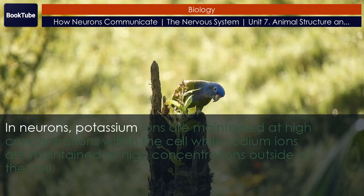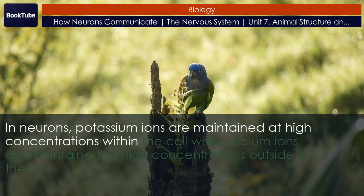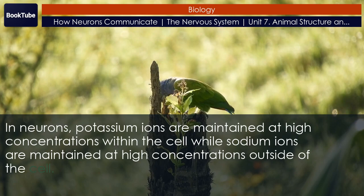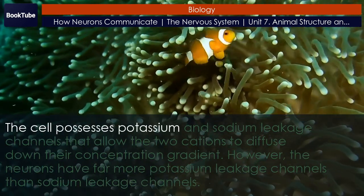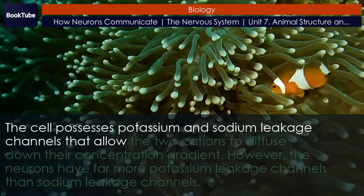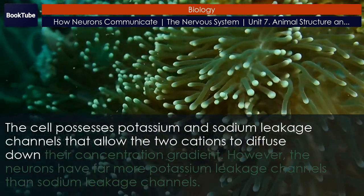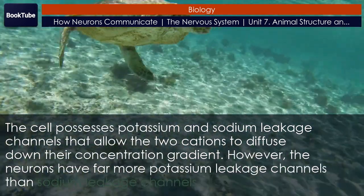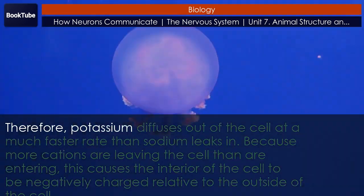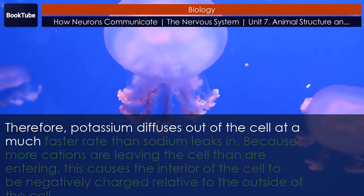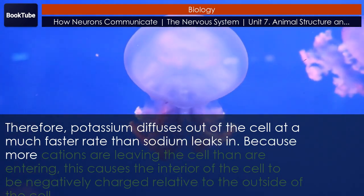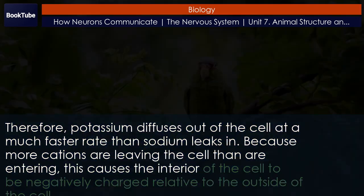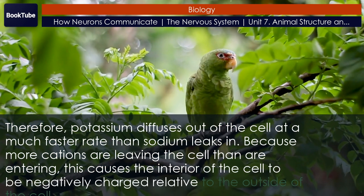In neurons, potassium ions are maintained at high concentrations within the cell while sodium ions are maintained at high concentrations outside of the cell. The cell possesses potassium and sodium leakage channels that allow the two cations to diffuse down their concentration gradient. However, the neurons have far more potassium leakage channels than sodium leakage channels. Therefore, potassium diffuses out of the cell at a much faster rate than sodium leaks in. Because more cations are leaving the cell than are entering, this causes the interior of the cell to be negatively charged relative to the outside of the cell.